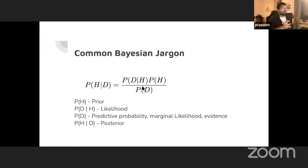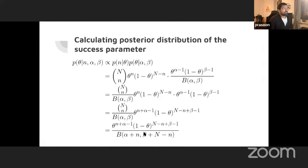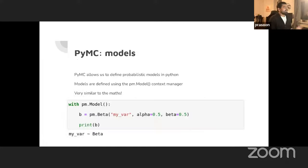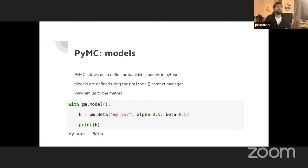I've done this so we can compare the posterior calculated analytically versus using PyMC — a framework to calculate posterior probabilities by simulation. You might ask: we just calculated the formula, why do we even need PyMC?